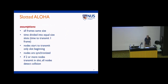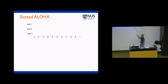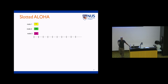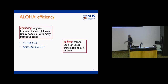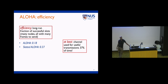Then we looked at random access, starting with slotted ALOHA. In slotted ALOHA, time is broken into slots. If you have a packet to send, you wait for the next slot and send. If there is a collision, in the next time slot you don't transmit again; instead, you generate a random number, and if it's less than some predefined value P, you get to transmit. At most 37% of slots can have successful transmissions — not very good, but okay. If the number of users is large, throughput goes down considerably.